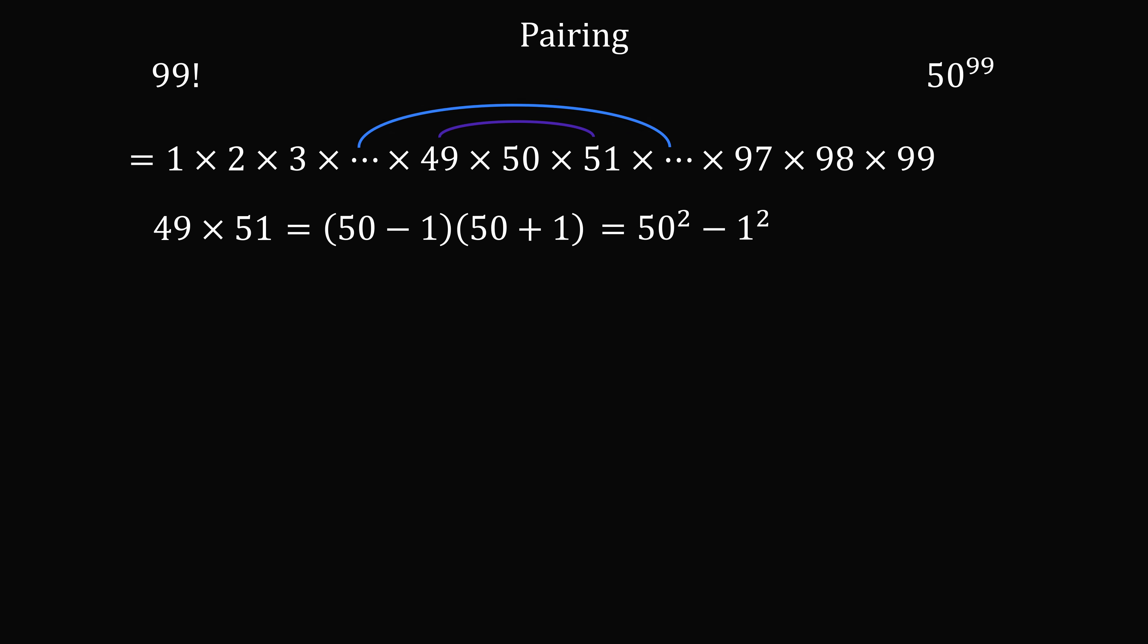We can then pair the next two numbers. We have 48 times 52. That'll be 50 minus 2 multiplied by 50 plus 2. So that'll be a difference of squares, 50 squared minus 2 squared.